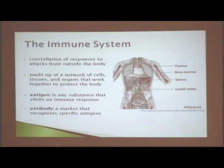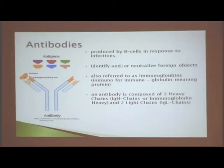An antigen is any substance that can cause your body to have an immune response, and an antibody is something that's produced by B cells in the blood, and it marks specific antigens so that T cells in your blood can destroy them. Antibodies are produced by B cells in response to infections, and they identify or neutralize foreign objects. They're also referred to as immunoglobulin — immune, globulin meaning protein.